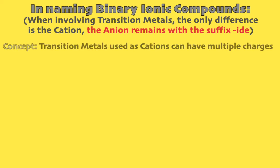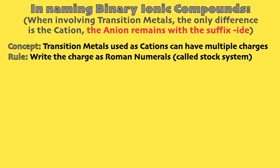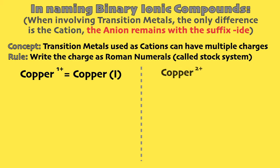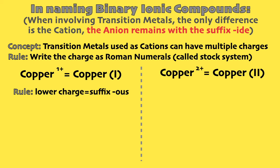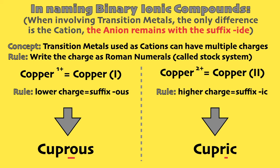When your cation is a transition metal, they can have multiple charges so refer to the list shown earlier. For example, copper can be 1+ or 2+, so we write that as Roman numerals. Copper I is a 1+ ion and copper II is a 2+ ion. In situations like this, the lower charge gets the suffix "-ous" and the higher one gets the suffix "-ic". So it becomes cuprous for the 1+ copper and cupric for the 2+ copper.